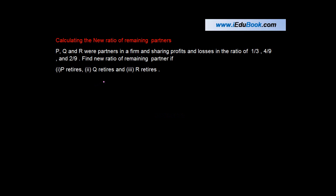We're calculating the new ratio of remaining partners and talking about the case of retirement. First, let's understand what this means. We know that a partnership is formed of various partners, right, and these partners share profits amongst themselves which arise to a firm in some particular ratio.